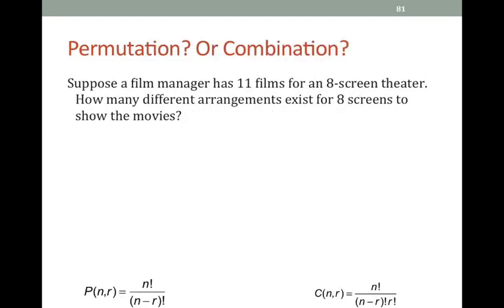And now the trick becomes, when you get a complicated problem figuring out, is it going to be a permutation, or is it going to be a combination? You have to look really carefully and read to see if there's any indication that order is important. So, suppose a film manager has 11 films for an 8-screen theater. How many different arrangements exist for 8 screens to show the movies? Now think about that. Is it a permutation, or is it a combination? Pause the video if you need to think a little bit more about it.